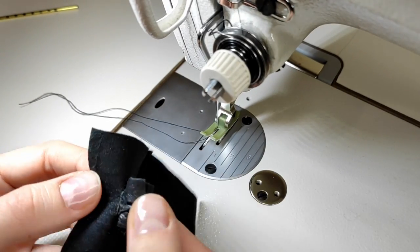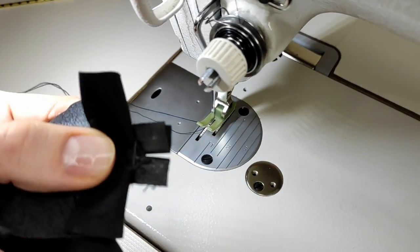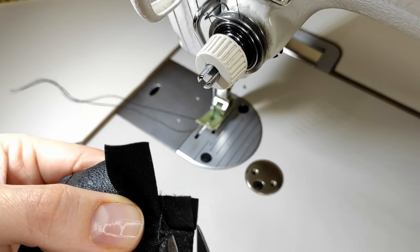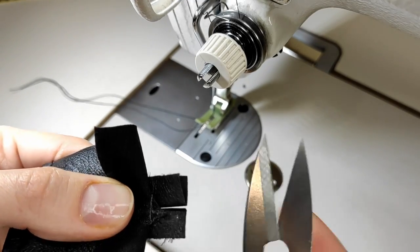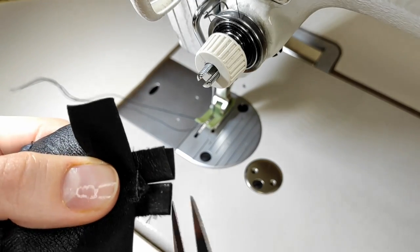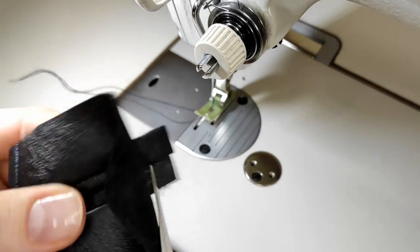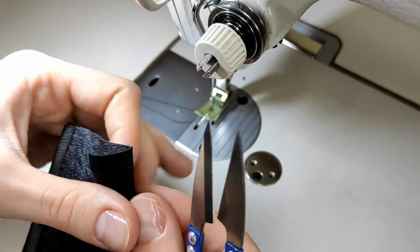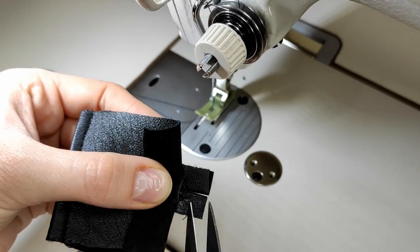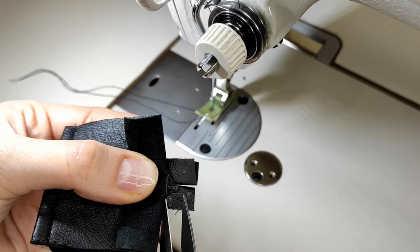Next we need to sew this triangle to the welts. Don't make the mistake of sewing this triangle to the basic fabric. I have done it before. Make sure to stitch it only to the welts.